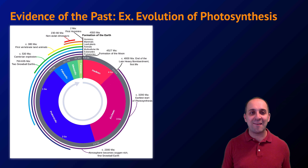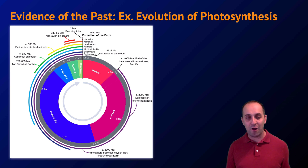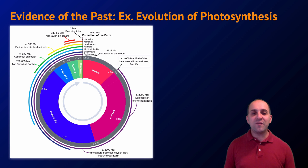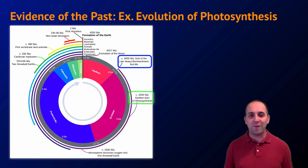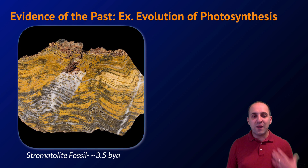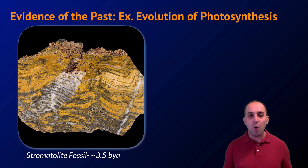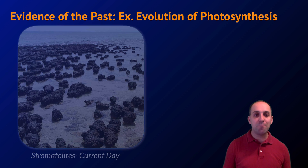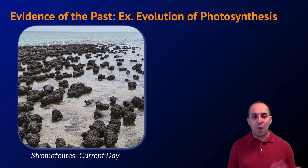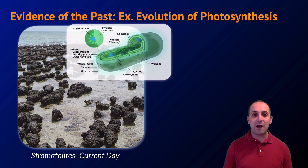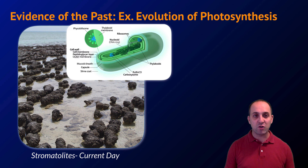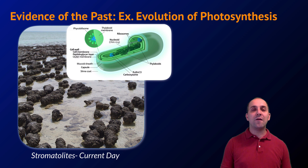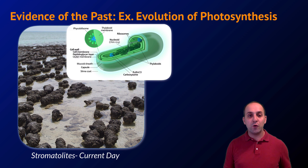We're going to use the evolution of photosynthesis as our example of how we get evidence of events that occurred deep in Earth's past. The earliest date for the origin of life is about 4 billion years ago, and the earliest start to photosynthesis is around 3.2 billion years ago. We can find fossilized evidence — these are fossils of stromatolites from about 3.5 billion years ago. Modern stromatolites are made by cyanobacteria, which are photosynthetic bacteria, so it's not unreasonable to conclude the ancient ones were too.